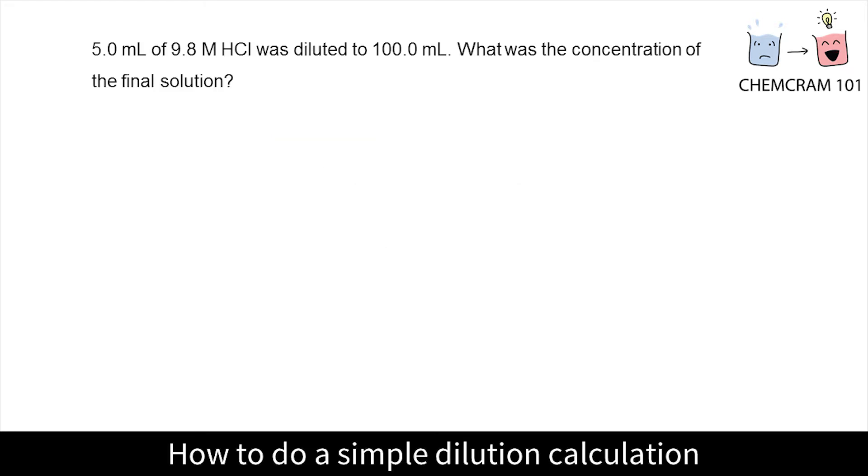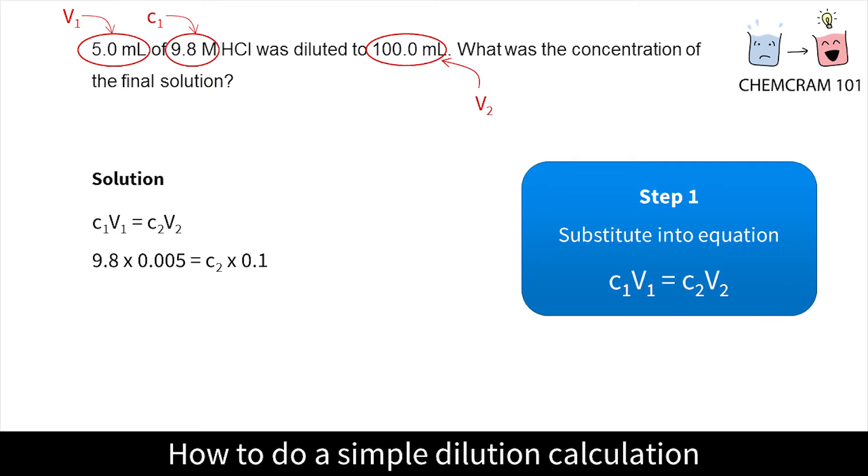Let's use the equation C1V1 equals C2V2 to solve a dilution. Let's label all our numbers. The original solution 1 had a concentration of 9.8 molar and a volume of 5 mL. The final solution had a volume of 100 mL. You can substitute the numbers first or rearrange the equation first. I'm going to substitute first. Note that when you substitute the volumes, you should be using liters, which means you need to divide the mL given in the question by 1000.